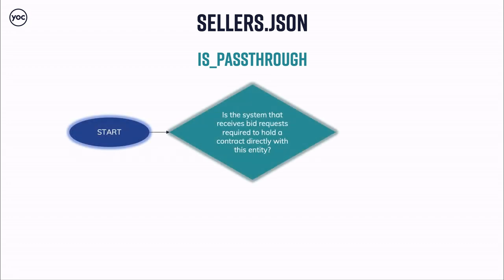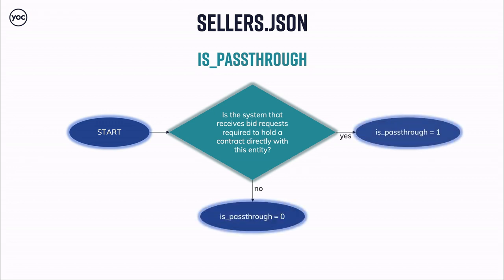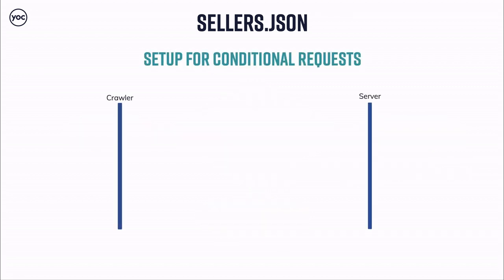If seller type is 'publisher,' the ad system should be listed as 'DIRECT' in the ads.txt file operated by the inventory owner. If 'intermediary,' it should be listed as 'RESELLER.' If 'both' is set, there must be two records in ads.txt — first as direct seller, second as reseller. The 'pass through' attribute is an optional integer with a default value of zero. A pass-through seller is a facilitator of inventory from the upstream supplier to the consumer, where the upstream supplier must establish a direct business relationship within the consumer's platform. Currently only Google Exchange Bidding, Amazon TAM, and BidSwitch are examples of pass-through systems.